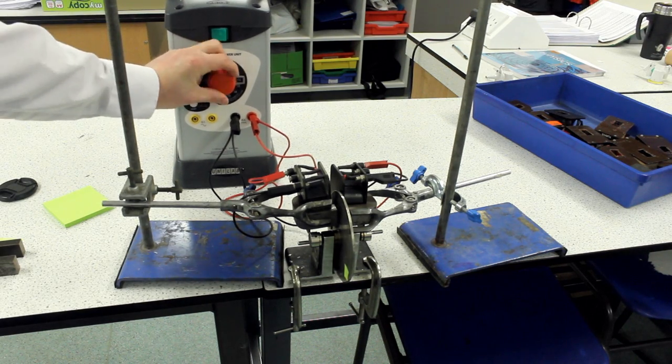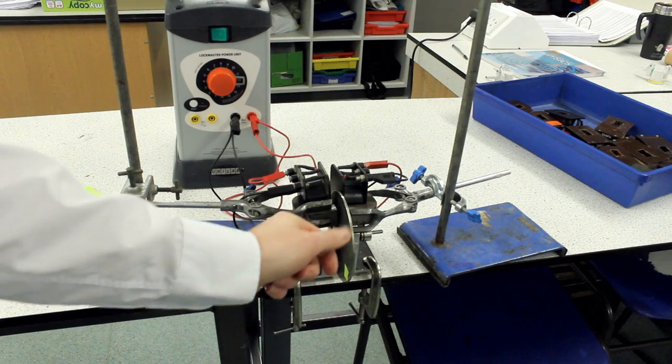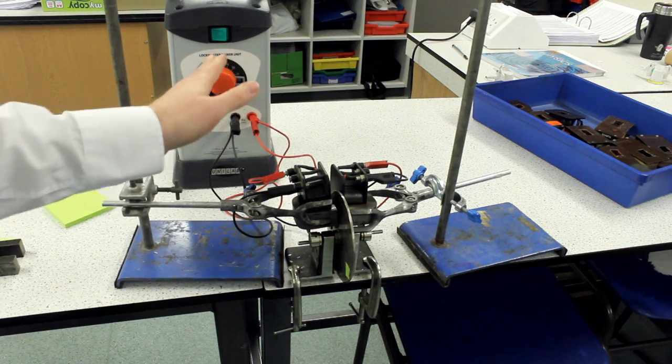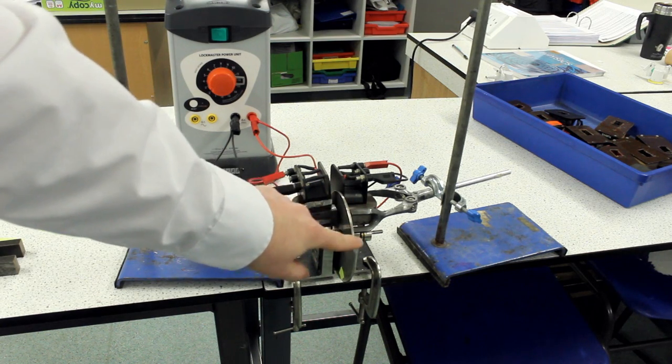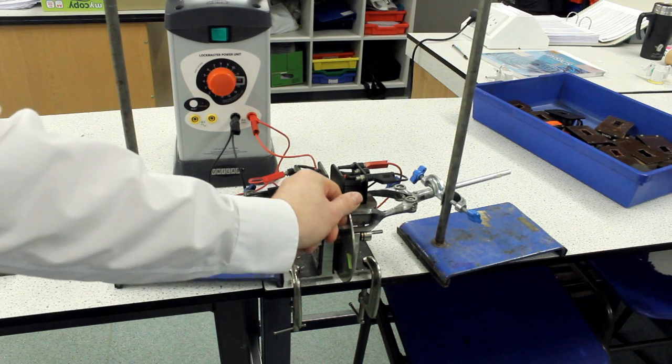First of all I'm going to spin the disc without having any current through those coils. I've put a little bit of green paper so you can get an idea of how fast it spins.